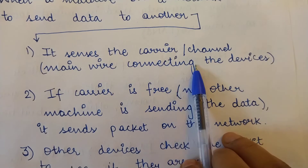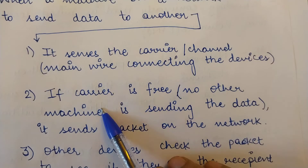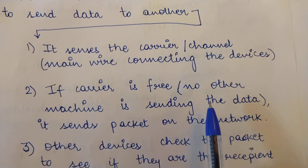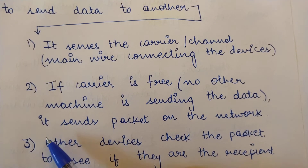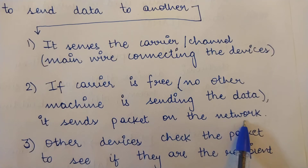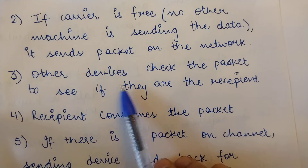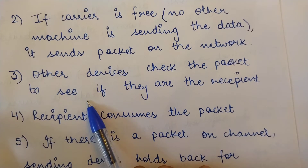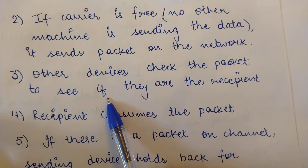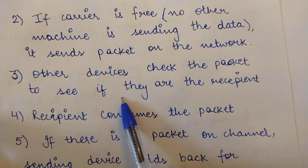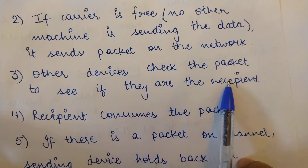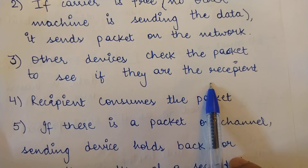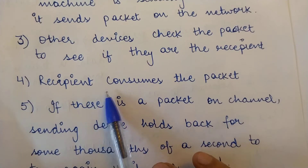If the carrier is free — meaning no other machine is sending data through that carrier at that point in time — then the machine sends its data packet on the network. All other intermediate devices which receive the packet will check the packet and look at the address field. If they find their own address mentioned, they will receive and process it; otherwise, they will ignore it.